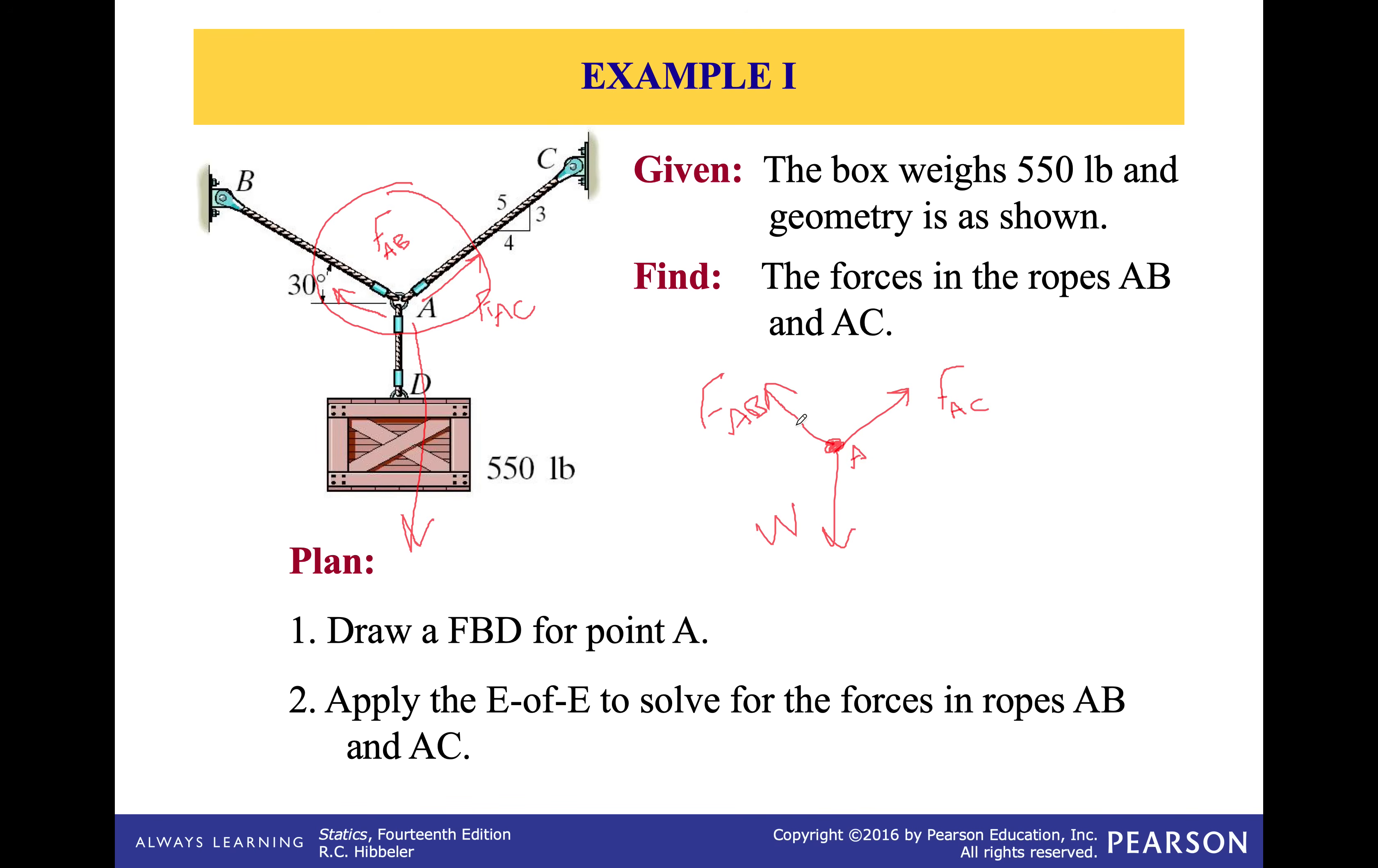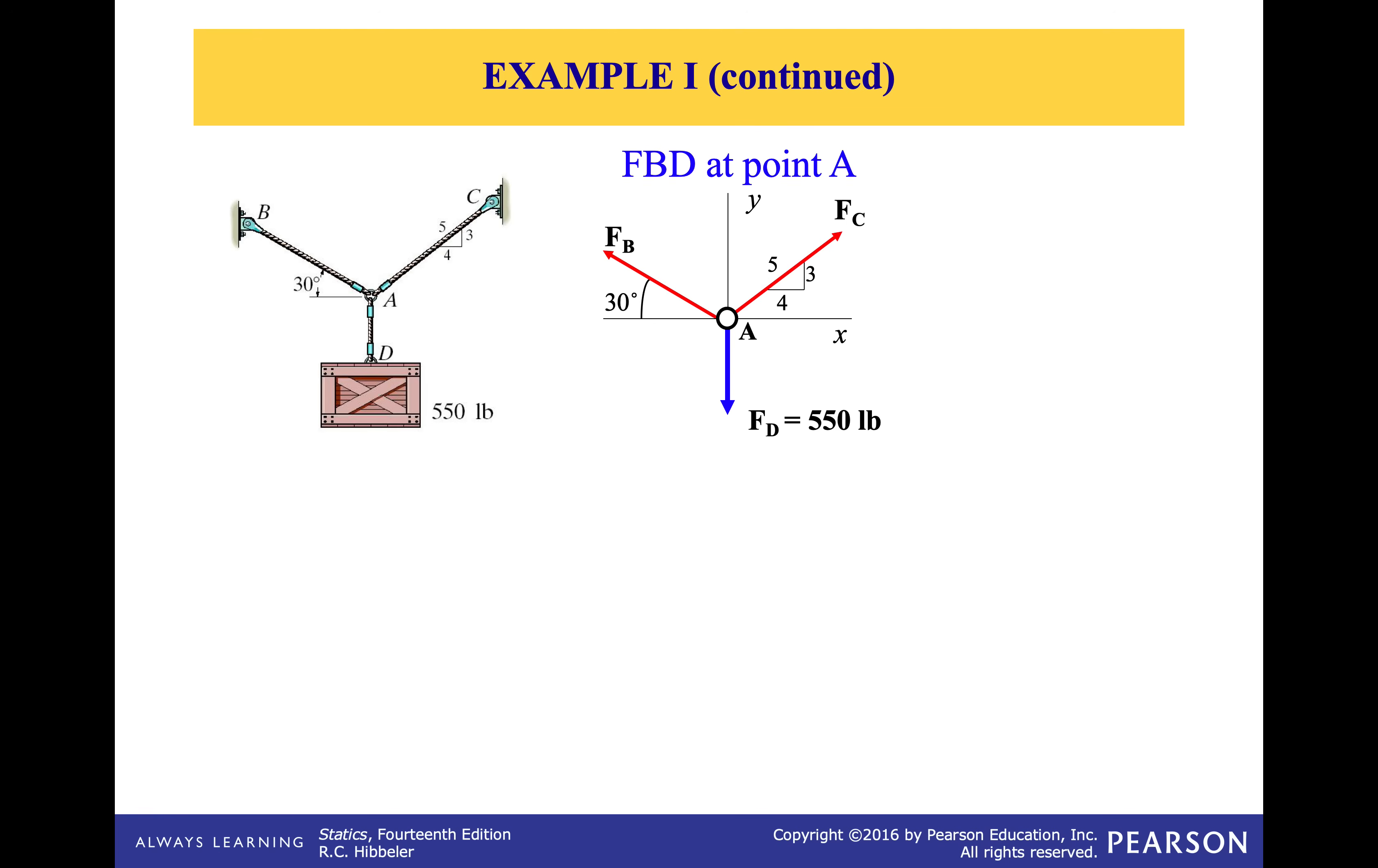Step two is constructing the equations of equilibrium, which means that before doing the equations of equilibrium or constructing them, I need to resolve FAC and FAB into the X and Y axes. So I will construct positive X, positive Y, and see using whatever I'm given here as clues to do the projections, the angles and the triangle here. So how are we going to do this? Let's see.